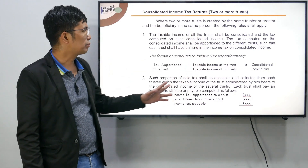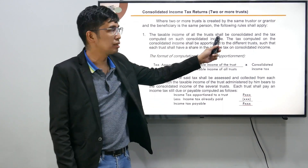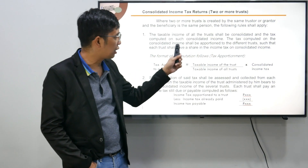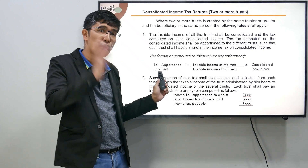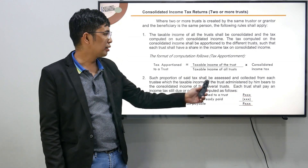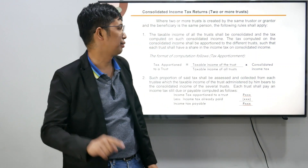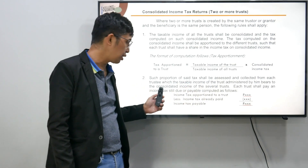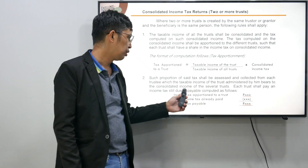How do we compute the income tax of consolidated trust? The taxable income of all the trusts shall be consolidated and the tax computed on such consolidated income. The tax computed on consolidated income shall be apportioned to the different trusts. Ganito ka mag-compute: for trust 1, taxable income niya over taxable income ng lahat ng trust, times yung income tax na mag-compute natin using the tax table. Such proportion of said tax shall be assessed and collected from its trustee, which the taxable income of the trust administered by him bears to the consolidated income of all the trust.